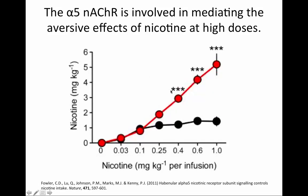Here is a graph showing the overall nicotine consumption in the alpha-5 knockout mice compared to wild-type littermates. This is nicotine consumption in milligrams per kilogram. You can see that the alpha-5 knockout mice in red consume much more nicotine at higher concentrations compared with the wild-type mice in black, suggesting that the alpha-5 subunit is involved in the aversive effects of nicotine.